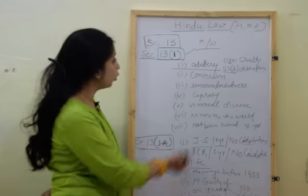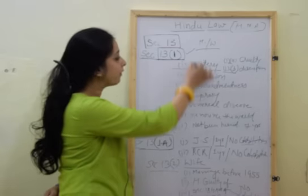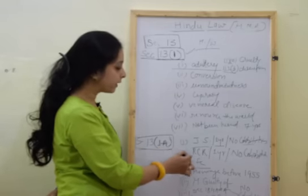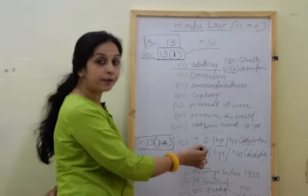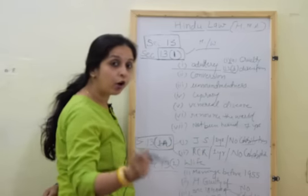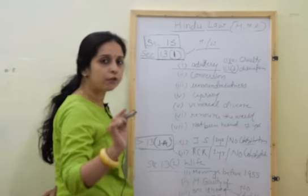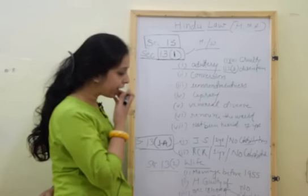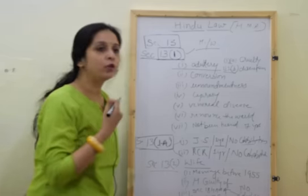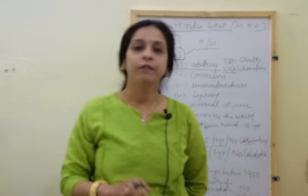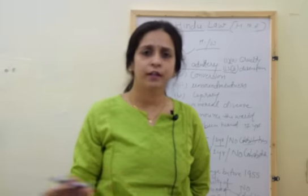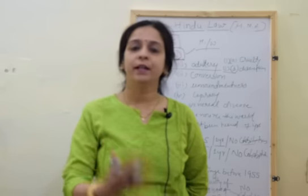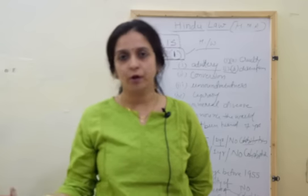Now, Section 13(2). Section 13(1) has rights available to both parties — in total nine grounds. Section 13(1A) covers special grounds for both parties based on decrees of judicial separation or restitution of conjugal rights. Section 13(2) provides four grounds available to the wife only. Remember, prior to 1955, we were not having any law relating to marriage, divorce, or adoption — we were completely dependent upon uncodified Hindu law provisions.